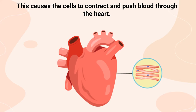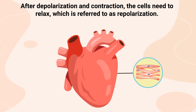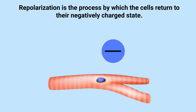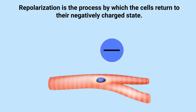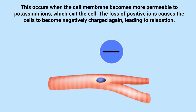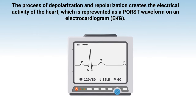This positive charge causes the cells to contract and push blood through the heart. After depolarization and contraction, the cells need to relax — a process referred to as repolarization. Repolarization occurs when the cell membranes become more permeable to potassium ions, which exit the cell, causing the cells to become negatively charged again and leading to relaxation.